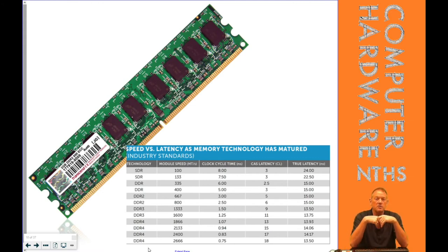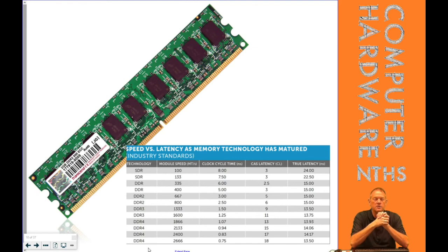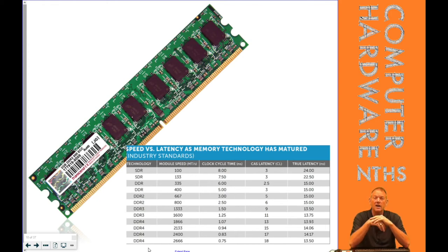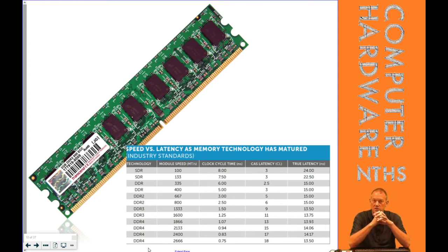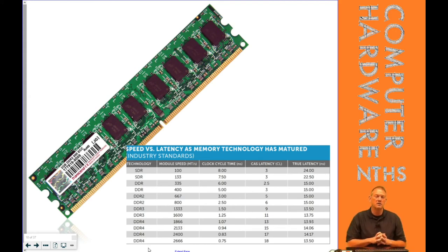The CPUs of today need DDR4 RAM, so the motherboards of today use DDR4 RAM. Most of our PCs here at National Trail are still DDR3 — they're the highest generation of DDR3 before it switched to DDR4, but they are DDR3.